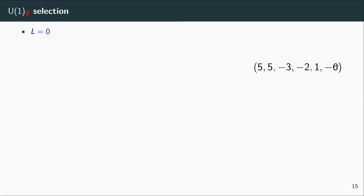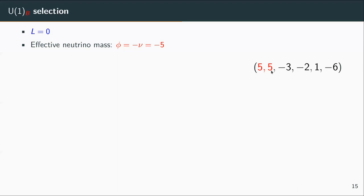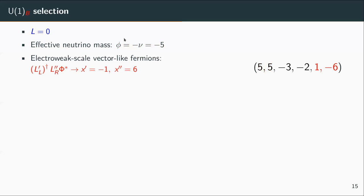For example, the solution with integers {5, 5, -3, 2, 1, -6}: we need to use it for a baryon gauge symmetry, so the left-hand lepton number must be zero. This is guaranteed because the nature of these charges will be used directly to define the charges of the Standard Model particles. The effective neutrino mass operator imposes a prediction for the singlet scalar charge, which in this case needs to be minus five, because we need at least two repeated charges to have masses for two Dirac neutrinos.